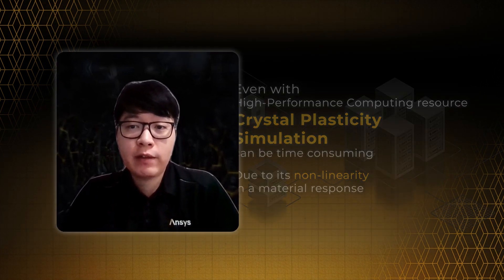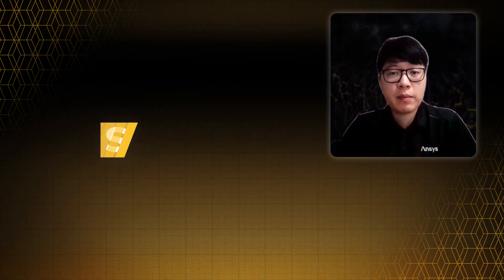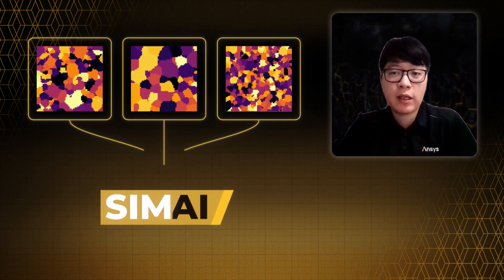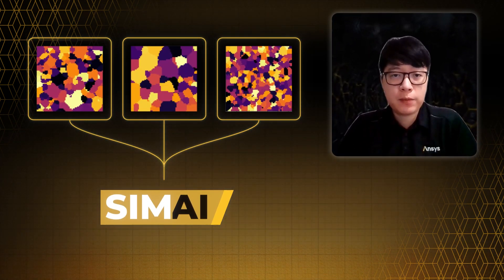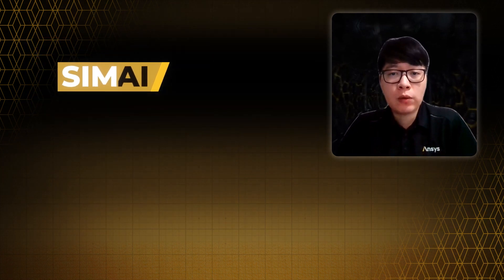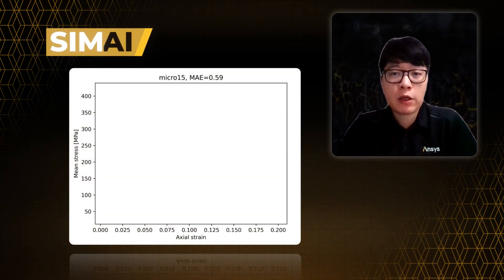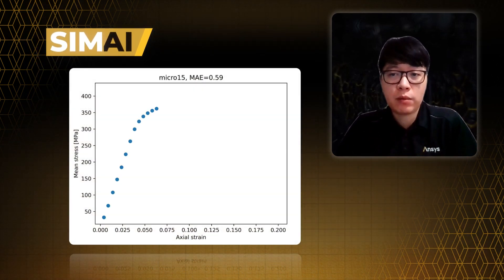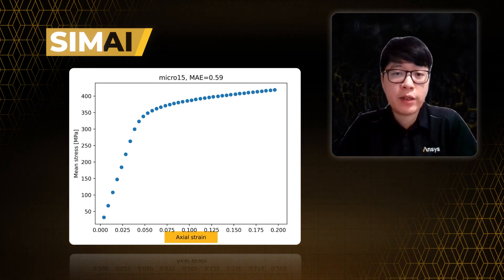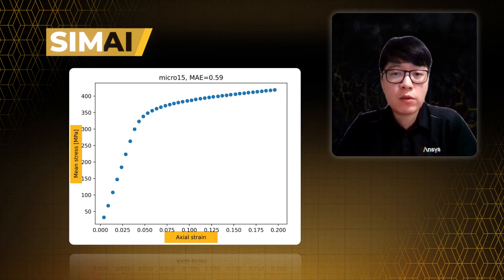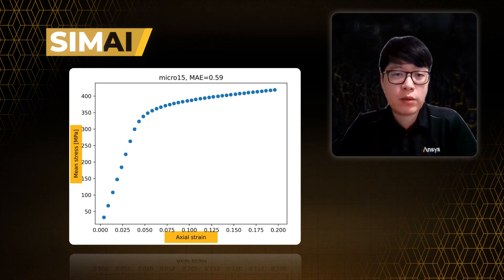Therefore, to effectively predict the stress-strain curves from a given microstructure, we trained the SimAI model using a crystal plasticity dataset with randomly generated microstructures. The SimAI model was trained to approximate the full stress field distribution as a function of the applied axial strain level, and the mean stress-strain curve can be extracted from the predicted stress field.